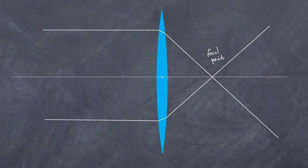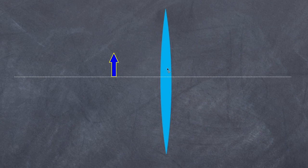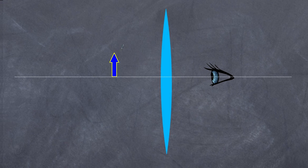Let's use that basis to understand why we can enlarge images. If I have my object here, I'm going to look at one particular light ray coming off it, placing my eye on the center line. The light from the bottom of the arrow travels right down the center line and doesn't refract, so the bottom of the arrow will be seen by my eye. But where will I see the top of the arrow? Light rays go in all directions but we are only interested in the one that hits my eye.